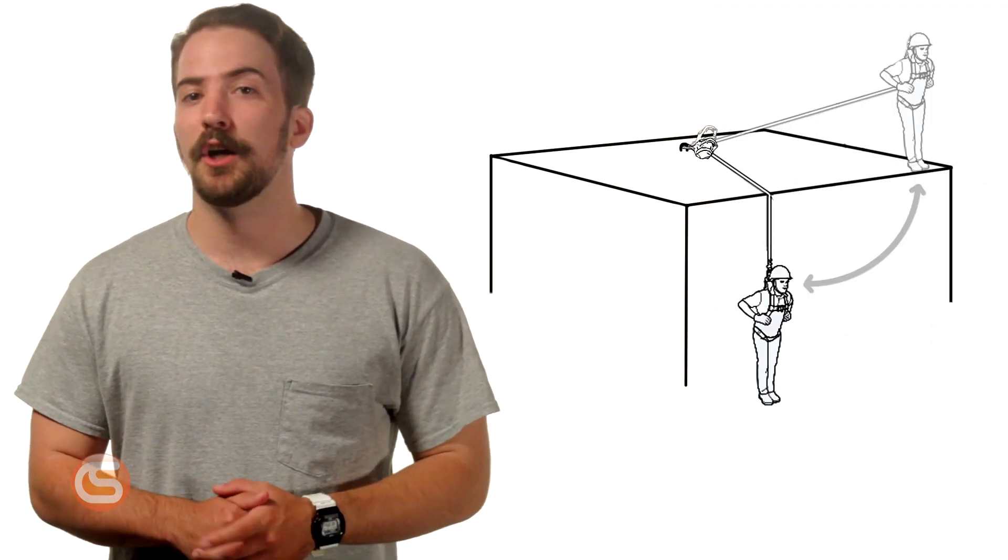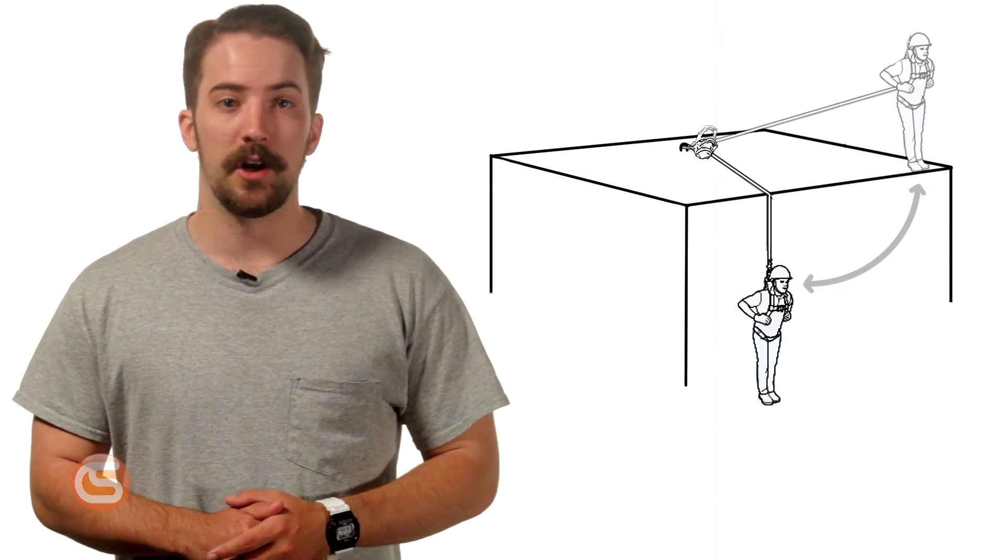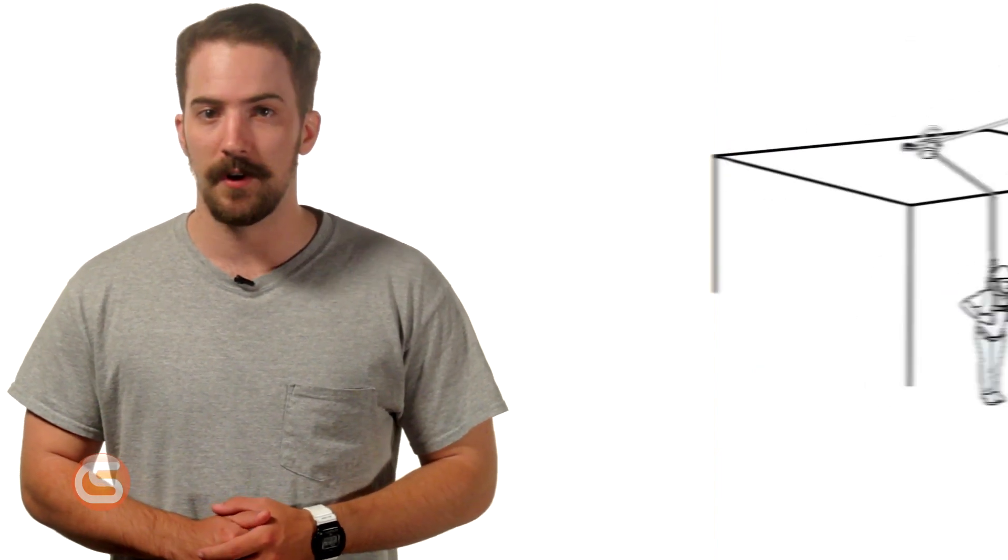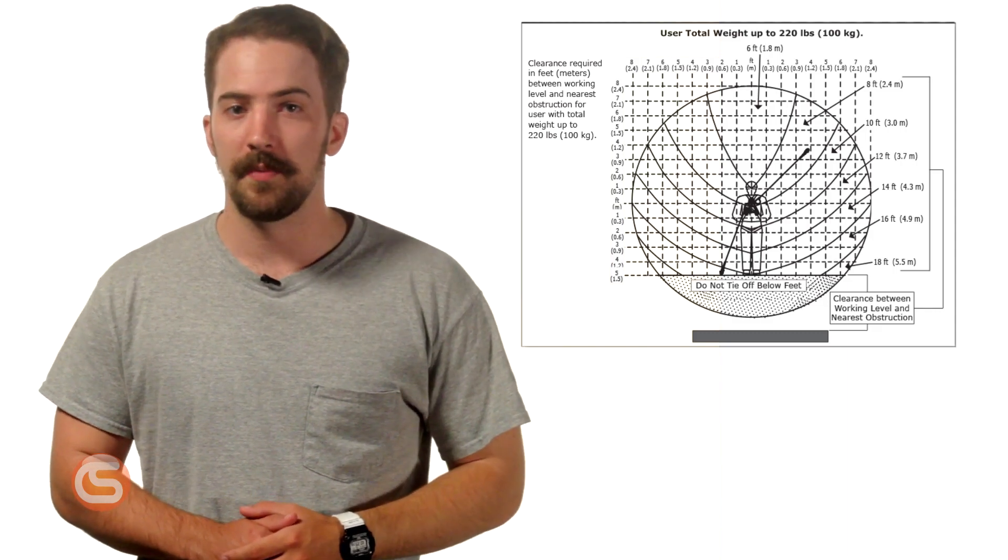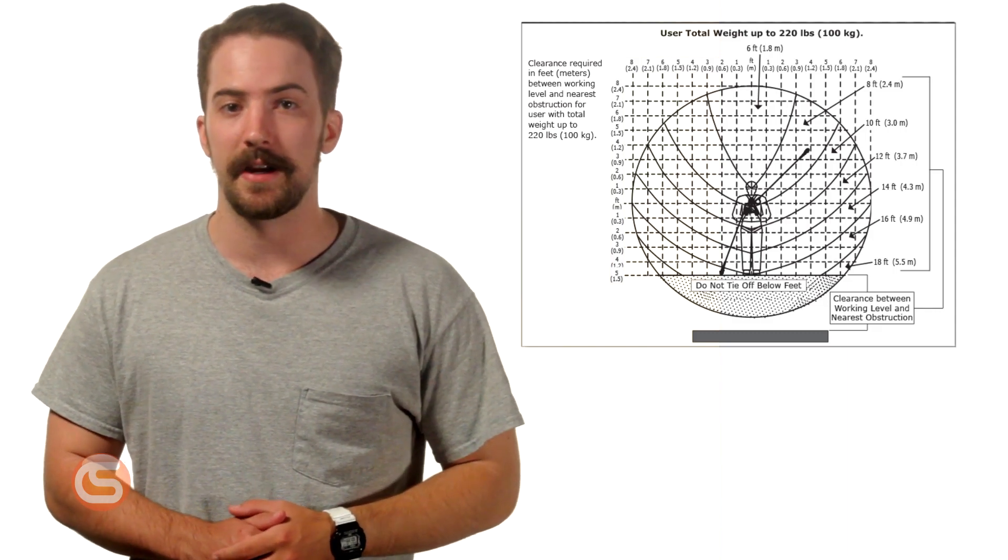Then there's a risk of swing hazard. The larger the horizontal distance is between you and your anchor point, the higher the risk of swing fall. The key factor in swing fall is the angle at which you're working away from your anchor point. Generally, fall clearance is calculated directly in line with your anchor, but as you move out and away from the anchor point, additional clearance needs to be accounted for.